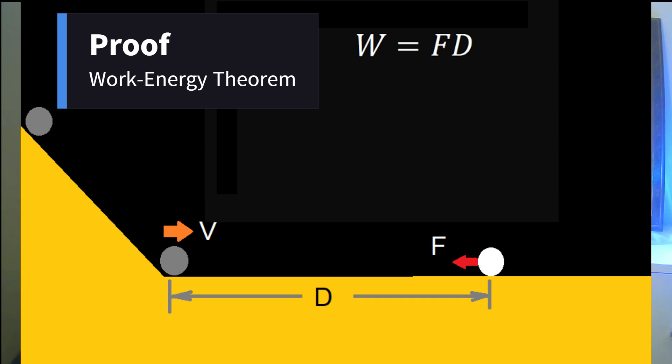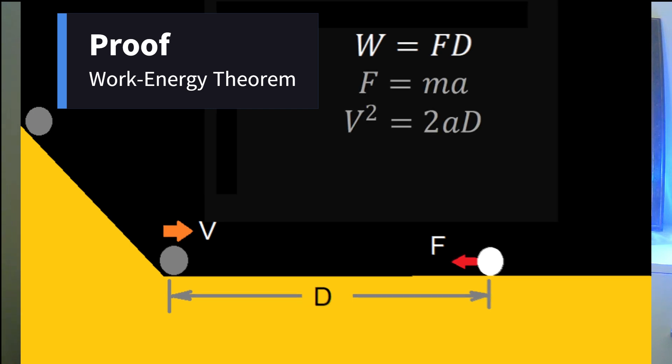On the other hand, assuming the velocity when the object arrives at the ground is v and the final velocity is zero, we can use the formula v squared equals 2 times acceleration times displacement. Multiplying mass m and divide it by 2,